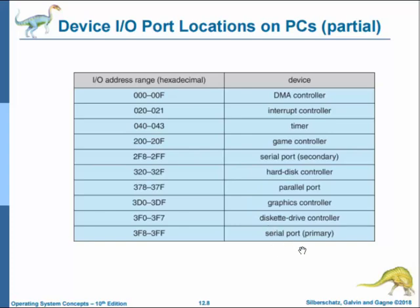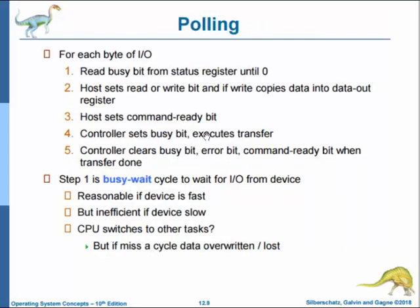An I/O device controller typically consists of four registers: the status register, the control register, the data-in register, and the data-out register. The complete protocol for interaction between the host and controller can be intricate, but the basic handshaking notion is simple. To explain handshaking: two bits coordinate the producer-consumer relationship between the controller and the host. The controller indicates its state through the busy (bc) bit in the status register — setting a bit means writing a 1, and clearing a bit means writing a 0.